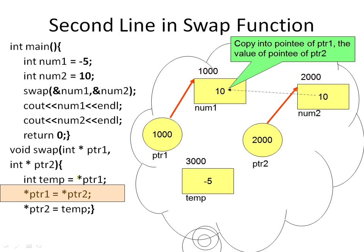Then in the next program statement, ptr2 is a pointer — follow the ptr2 pointer to the address stored in it, which is 2000, and get the value stored there, which is 10. Then assign it to the pointee of ptr1. The pointee of ptr1 is num1, so we copy the value 10 there — removing the old value and replacing it. So the meaning is: copy into the pointee of ptr1 the value of the pointee of ptr2.